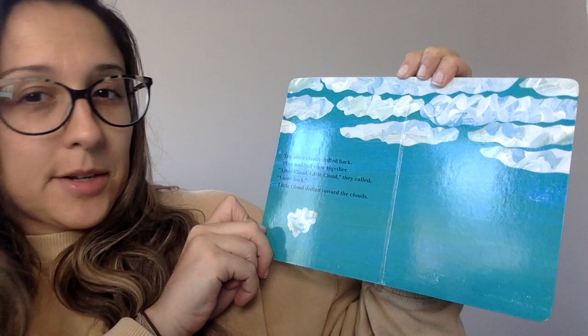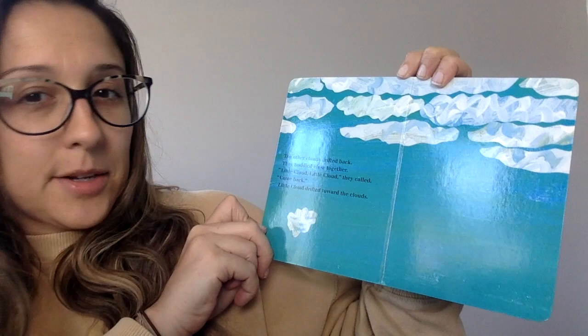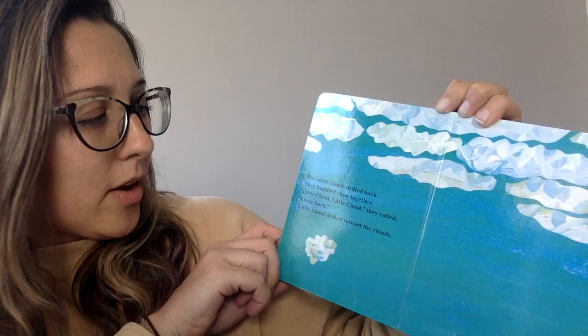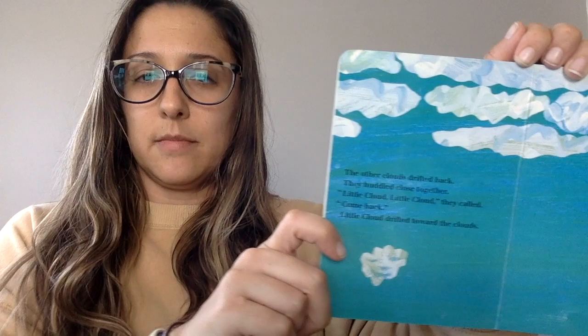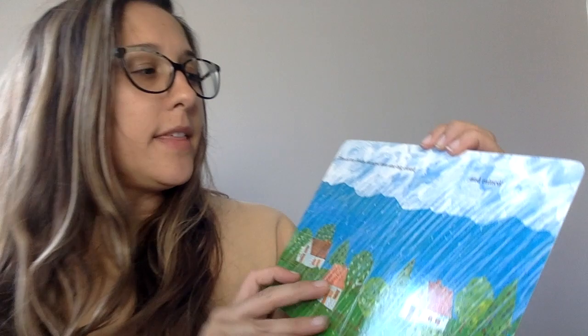The other clouds drifted back and they huddled closer together. 'Little Cloud, Little Cloud, Little Cloud,' they called, 'come back!' Little Cloud drifted towards the clouds. Then all the clouds changed into one big cloud — and it rained. The end!